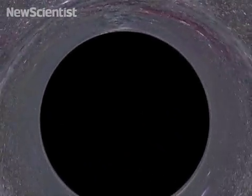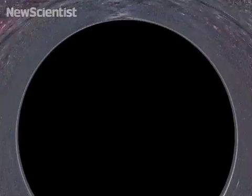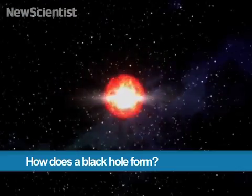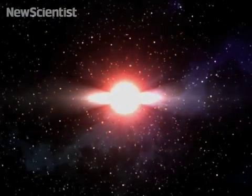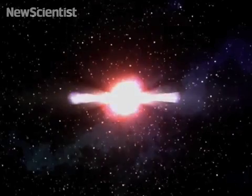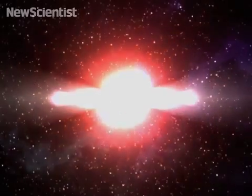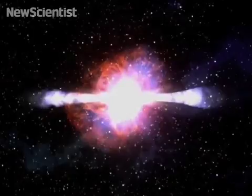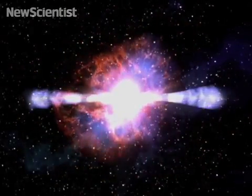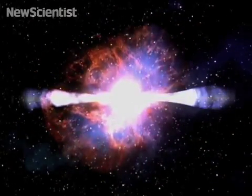A stellar mass black hole forms when a star more massive than about 25 Suns runs out of nuclear fuel and dies. The star's core collapses under its own gravity and explodes as a supernova, leaving behind a compact black hole.